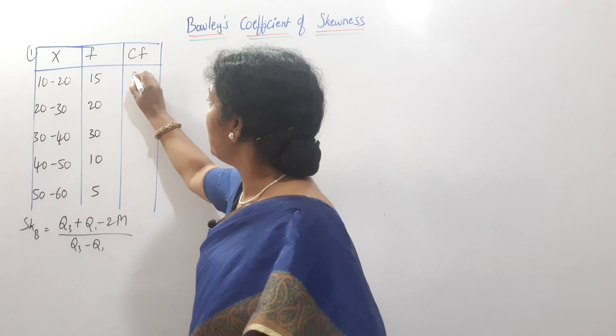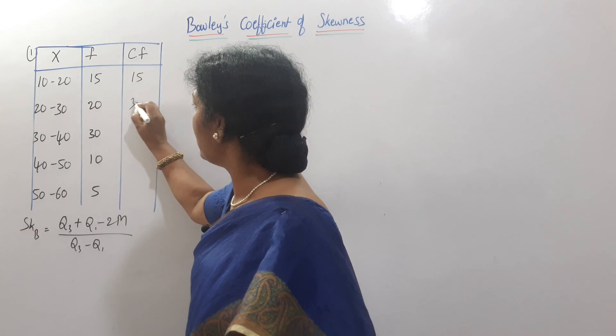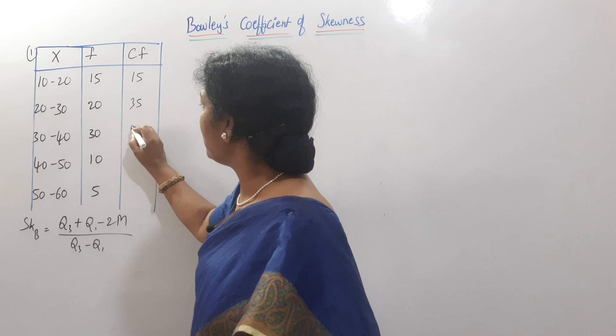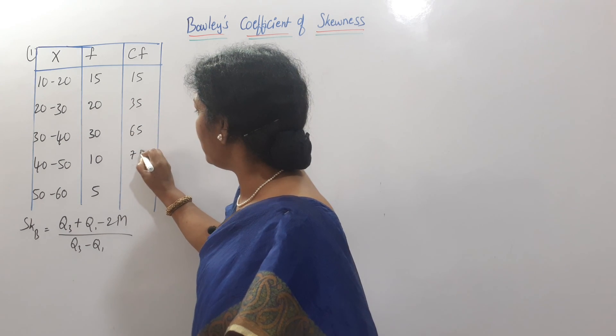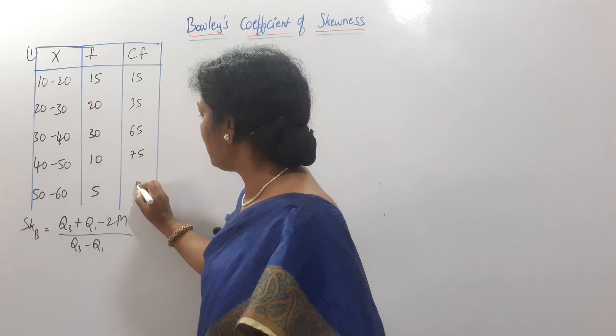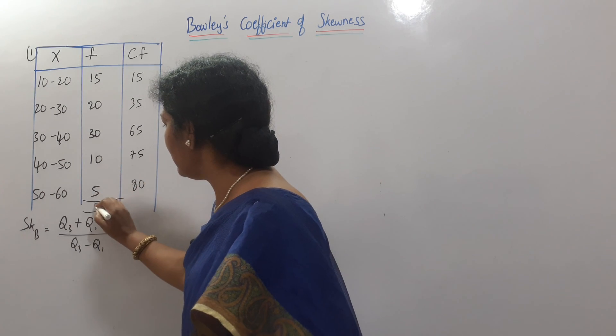CF cumulative frequency shall be provided already column. CF is here 15. Minimum is as it is, we will write. 15 plus 20, 35. 35 plus 30, 65. And 10 if we add 75. And 75 plus 5, 80. So, N is here 80.